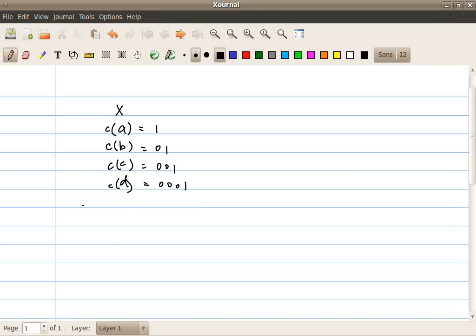And let's say we are trying to code a sequence c, b, a. And that will code into the concatenation of code word c(c), c(b), c(a). And that will be equal to 0, 0, 1, 0, 1.